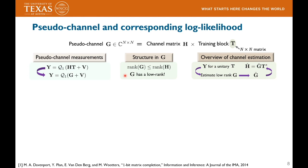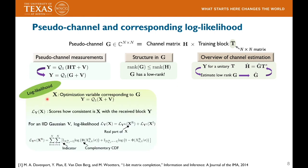At a very high level, channel estimation in our framework occurs as follows. First, the transmitter sends out a unitary training block T for the receiver to acquire channel measurement block Y. Then, the low-rank pseudo-channel G is estimated from Y. Finally, the channel H is estimated by simply multiplying the pseudo-channel estimate on the right by the conjugate transpose of the training block. To estimate the low-rank pseudo-channel G from Y, we define an optimization variable X — a complex matrix of size N×N. The log-likelihood is defined as a function measuring how consistent X is with the received block Y. Due to the i.i.d. Gaussian assumption on the noise block V, the log-likelihood decomposes into two parts corresponding to the real and imaginary components of X, with a closed-form expression for L_Y shown here.